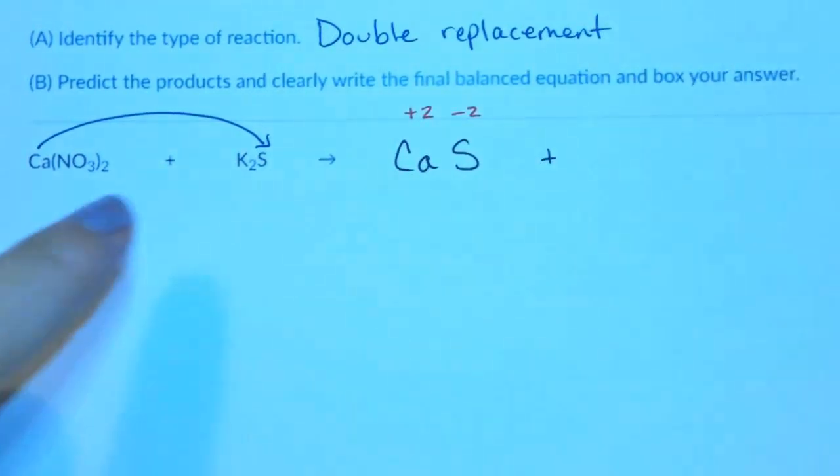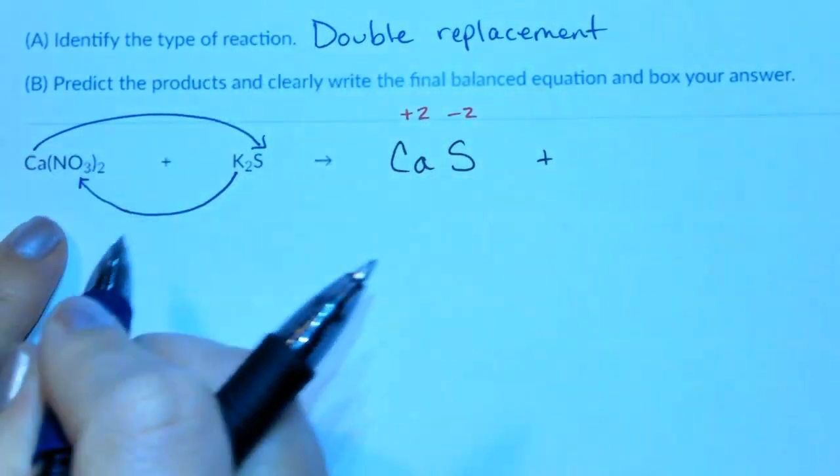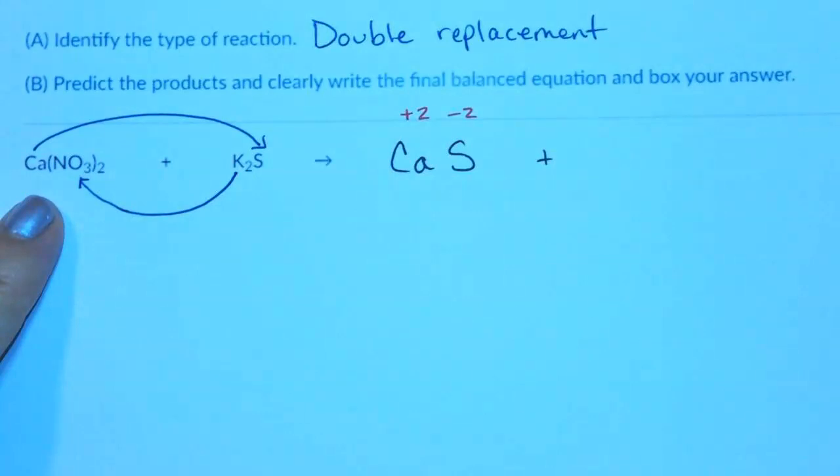Next, we're going to put the third, which is potassium, and second together, which is the nitrate, potassium and nitrate.